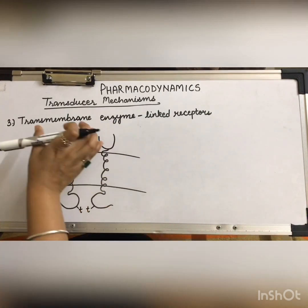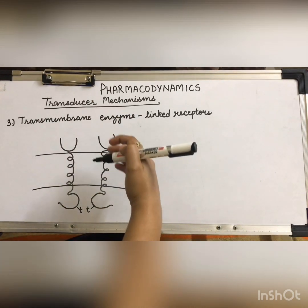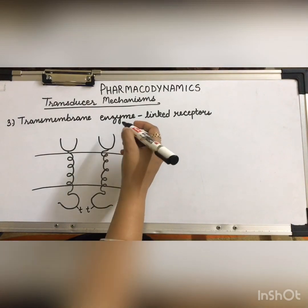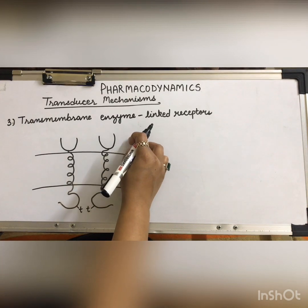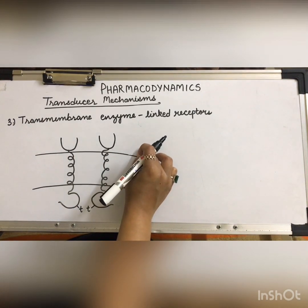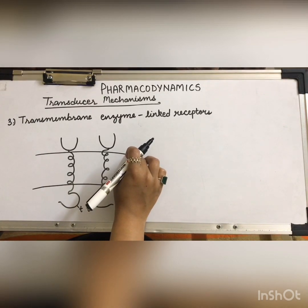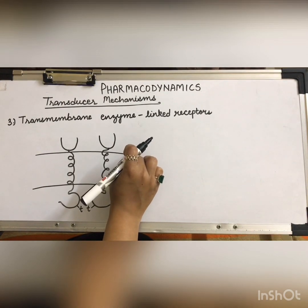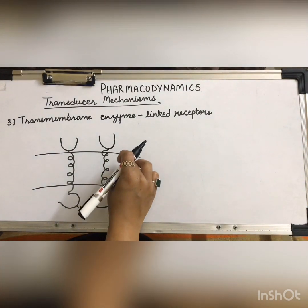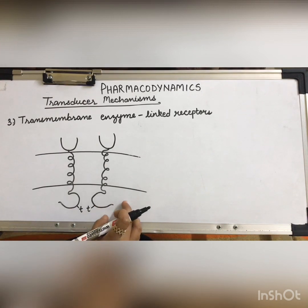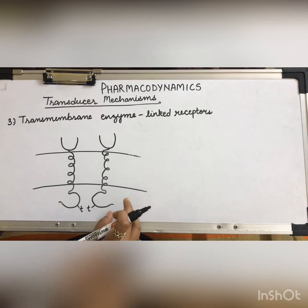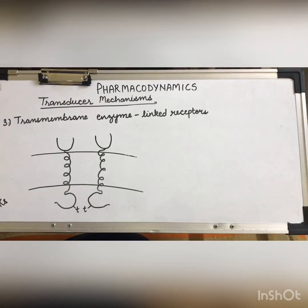The third type of transducer mechanism is transmembrane enzyme-linked receptors. They are called transmembrane because these receptors span the entire membrane, and enzyme-linked because the cytosolic side is linked with an enzyme. The extracellular part is the ligand binding site, mostly binding peptide hormones such as insulin, nerve growth factor, or epidermal growth factor. The intracellular subunit has protein kinase activity that phosphorylates tyrosine residues.